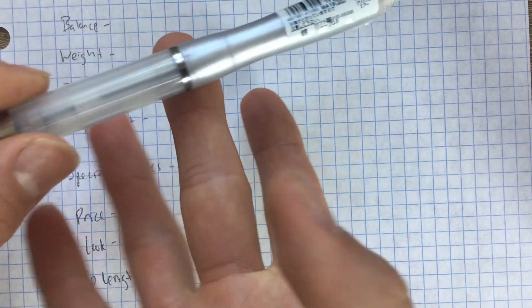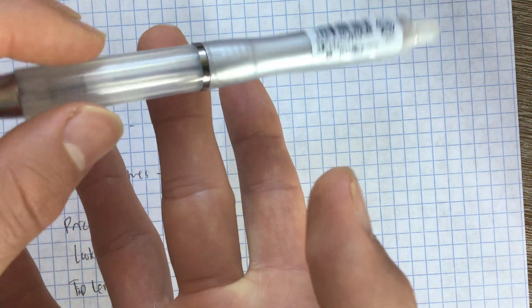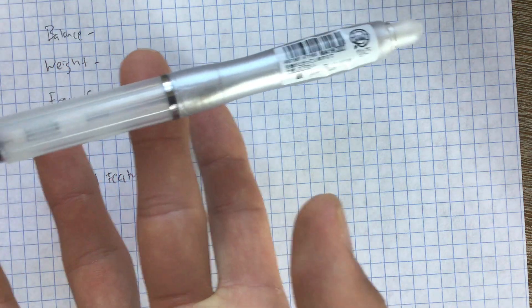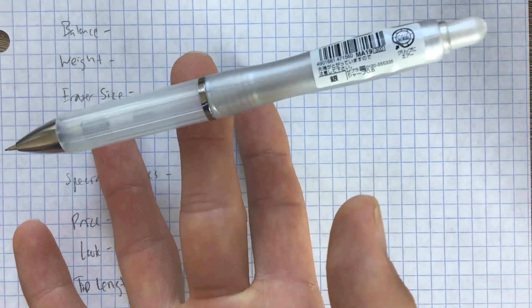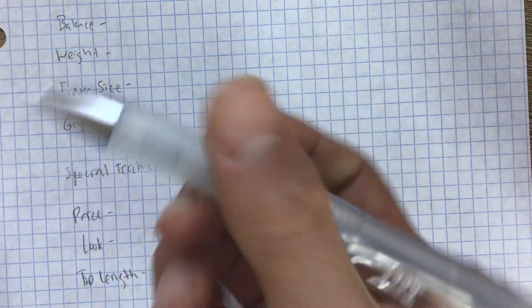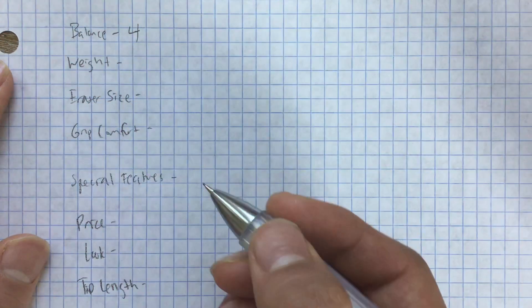Balance. I'll try to do the finger thing right there. So you can see it's actually a tiny bit closer to the tip. That's a plus. I'm going to give that a four out of five stars.